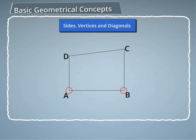The endpoints A and B of a side AB are called adjacent vertices. Also, a line segment joining two non-adjacent vertices is called a diagonal.